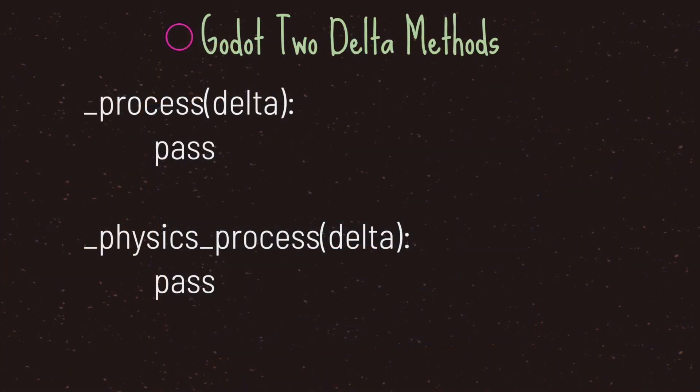Hello and welcome to another episode in the Godot Basics tutorial series. In this episode we will be taking a look at the process and physics process virtual methods. Godot offers us two ways of dealing with frame rate independency: through the process virtual method and the physics process virtual method.